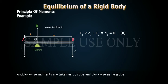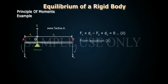Anticlockwise moments are taken as positive and clockwise as negative. From equation two, F1 D1 is equal to F2 D2, equation three.